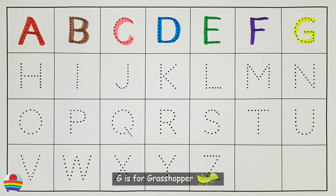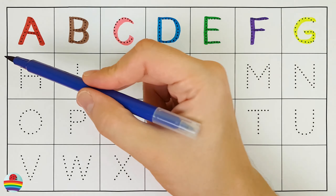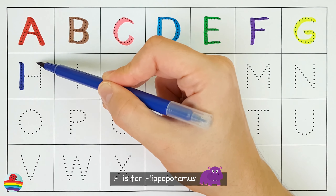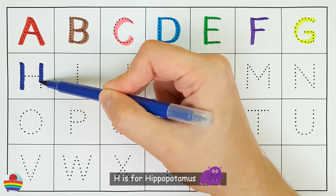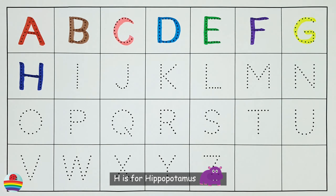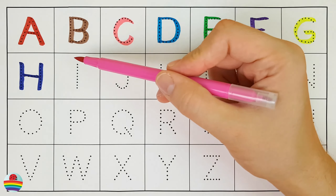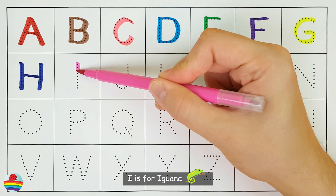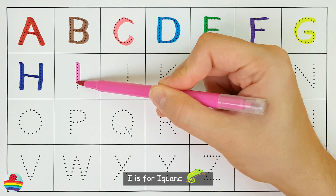G. G is for Grasshopper. G. H. H is for Hippopotamus. H.